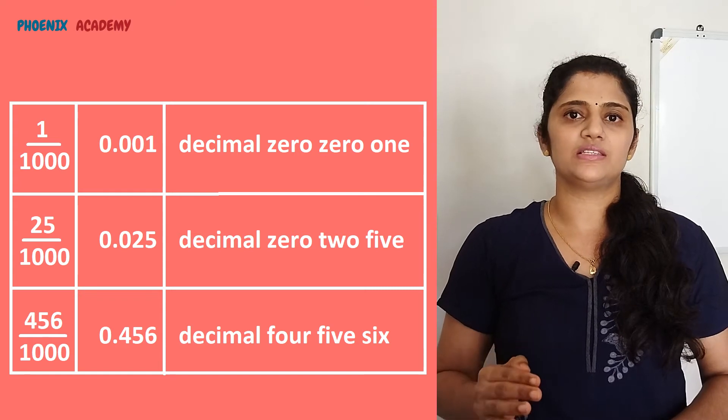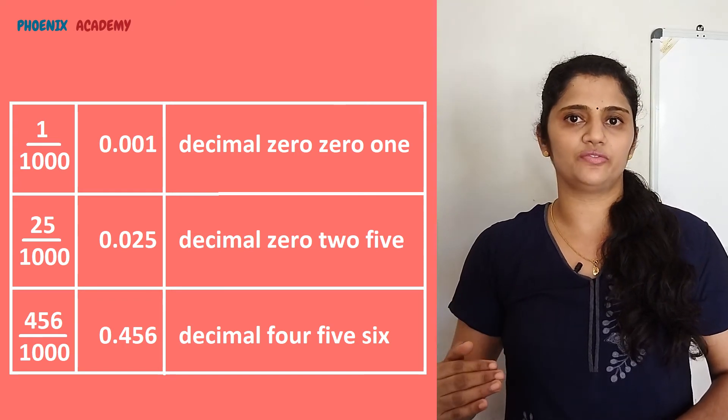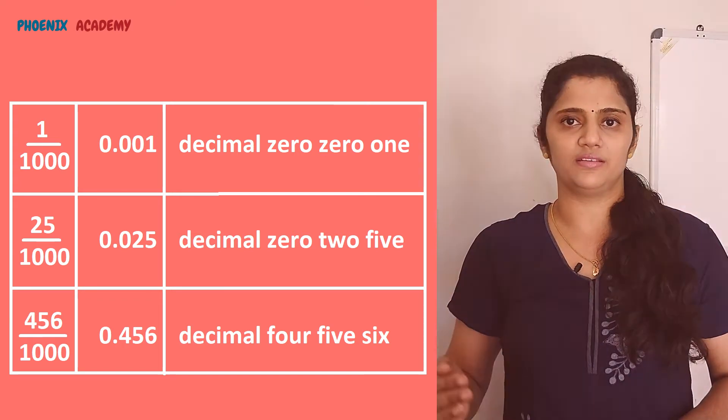Decimal fractions with 1000 as a denominator are called thousandths. To represent a fraction with 1000 as a denominator as a decimal fraction, just put a dot to the left of the digits in the hundredths place of the numerator.